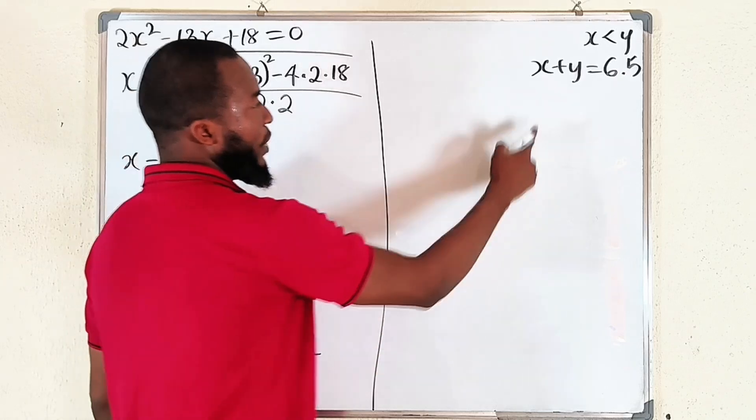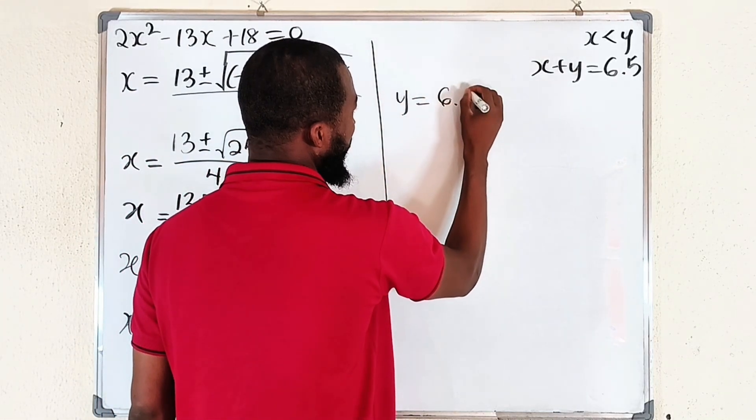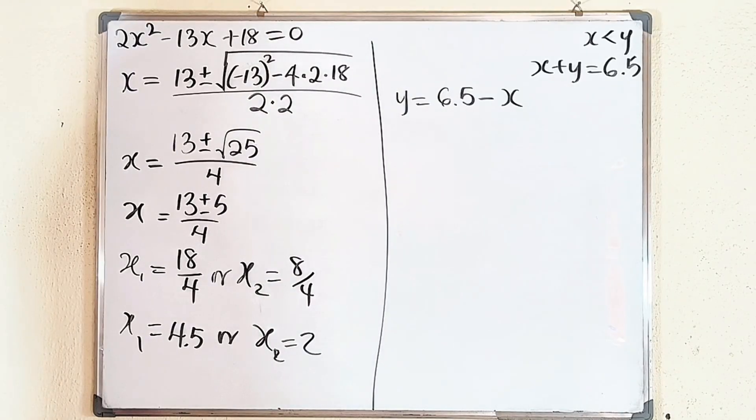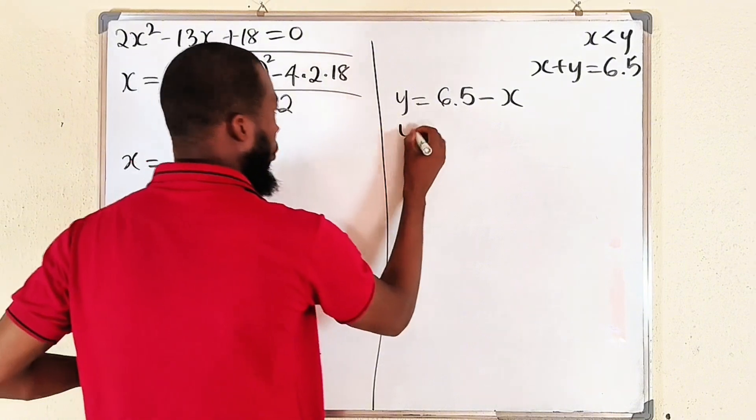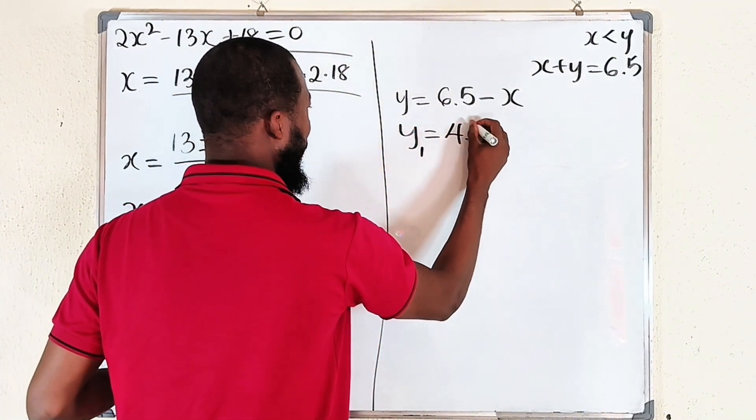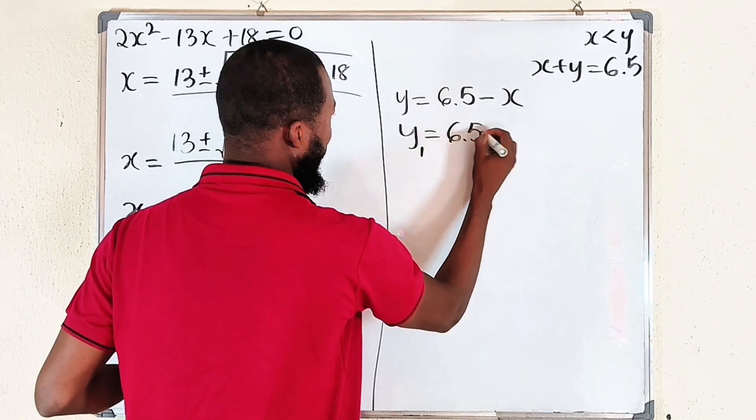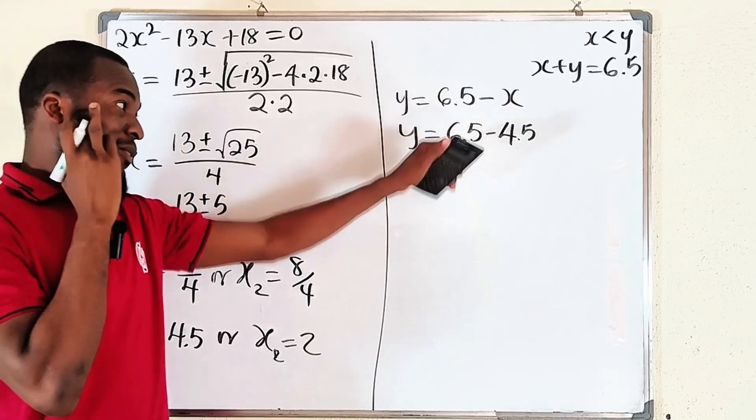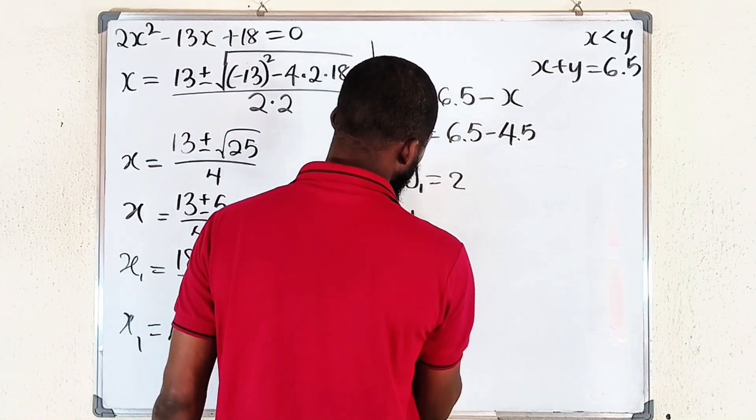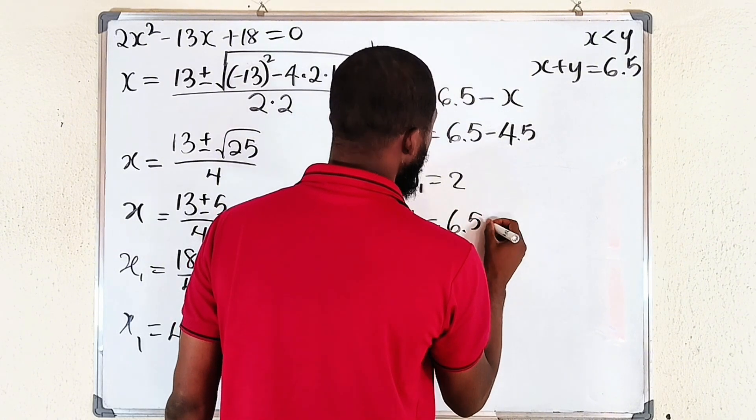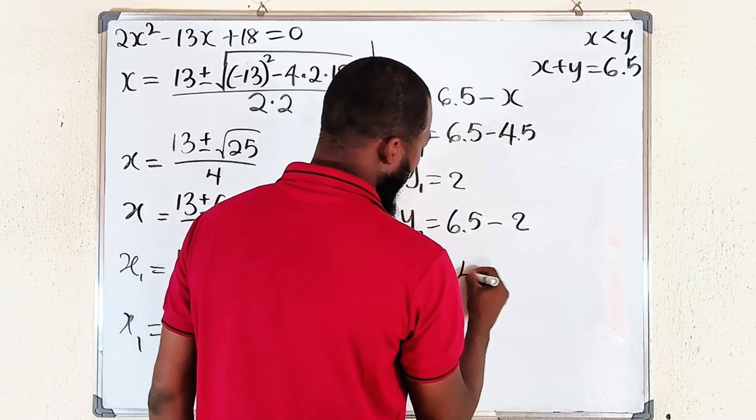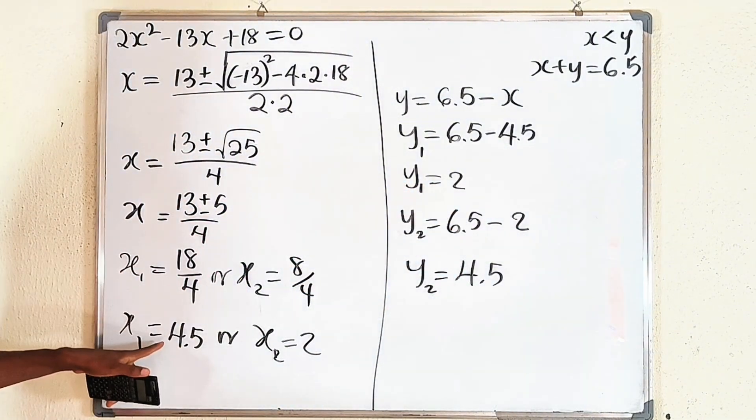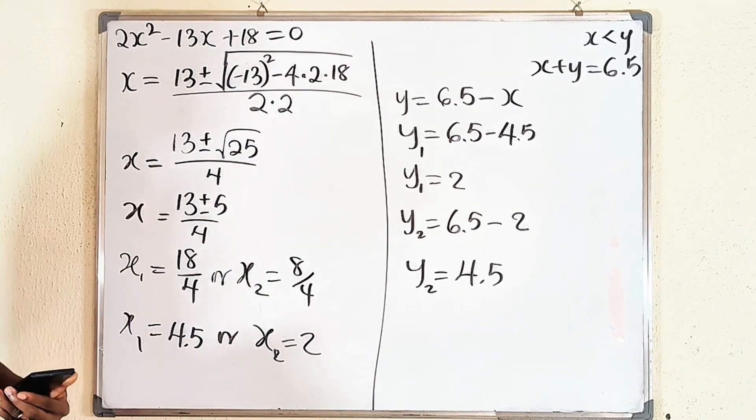We know that Y is equal to 6.5 minus x. Y1 will be equal to 6.5 minus 4.5, this is going to give us Y1 equal to 2. Then Y2 will be 6.5 minus 2, Y2 will be equal to 4.5. You can see the same combinations. In Y we have 2 and 4.5, in X we have 4.5 and 2, the same combinations.